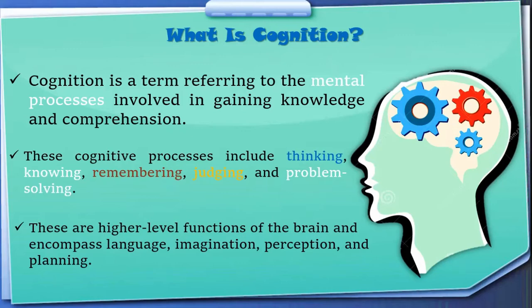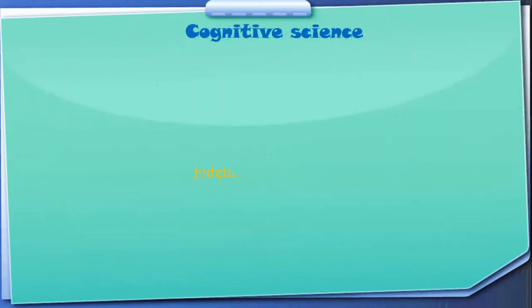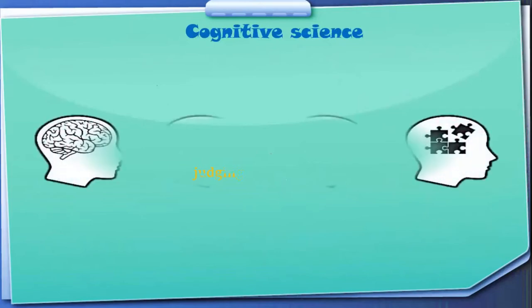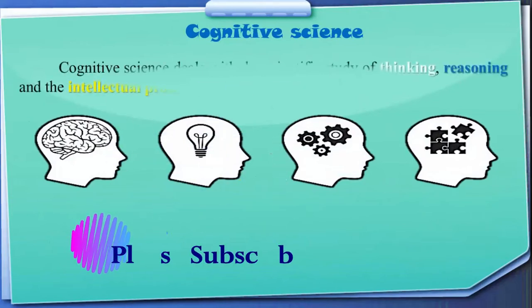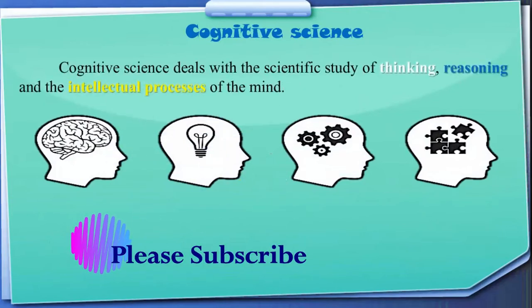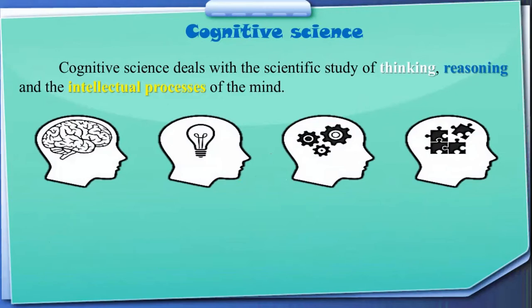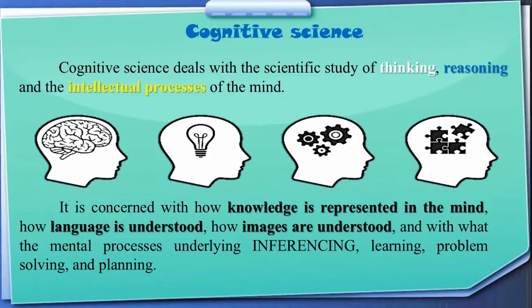Here is another explanation: cognitive science deals with the scientific study of the brain, thinking, reasoning, and the intellectual processes of the mind. It is concerned with how knowledge is represented in the mind, how language is understood, how images are understood, and with the mental processes underlying inferencing, learning, problem solving, and planning.